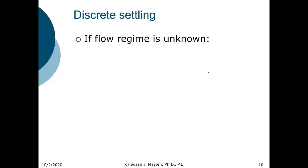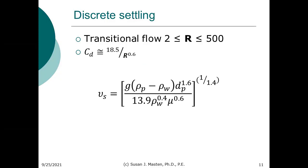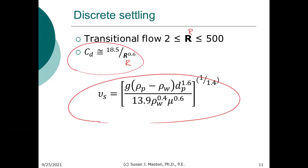If the flow regime is unknown, we need to use the more accurate general equation. If you're in the transitional flow regime — typically a Reynolds number between 2 and 500 — the coefficient of drag is approximately equal to 18.5 divided by the Reynolds number to the 0.6 power, giving a more complicated settling velocity equation. For the most part, you will attempt to operate in laminar flow, so the simpler Stokes equation should work.